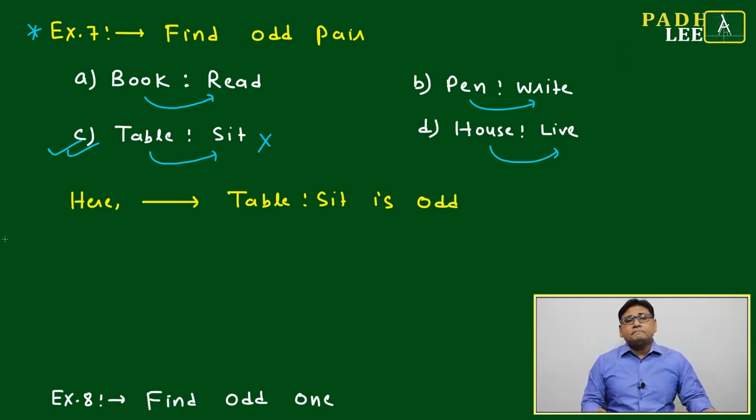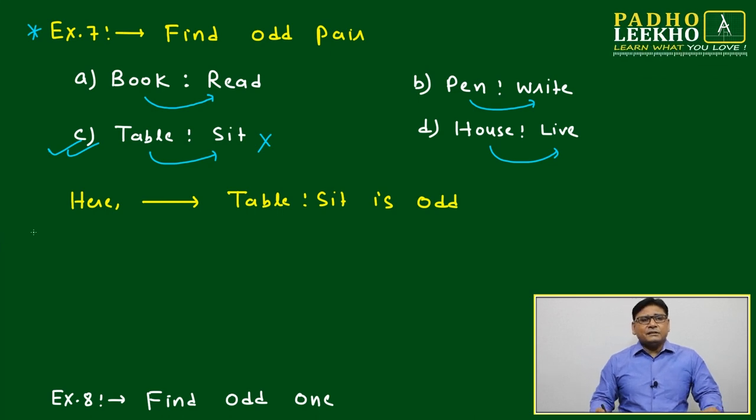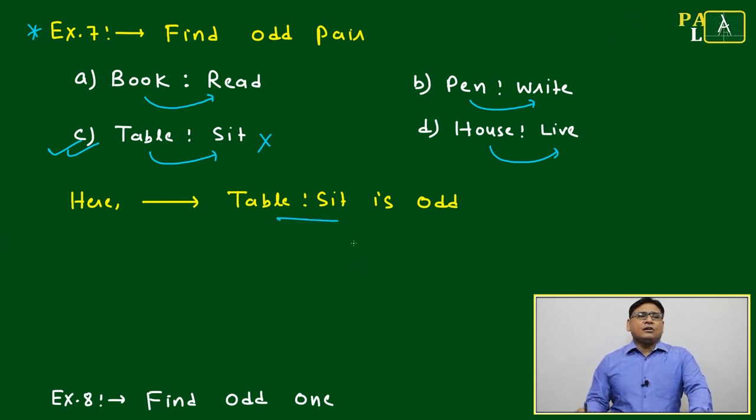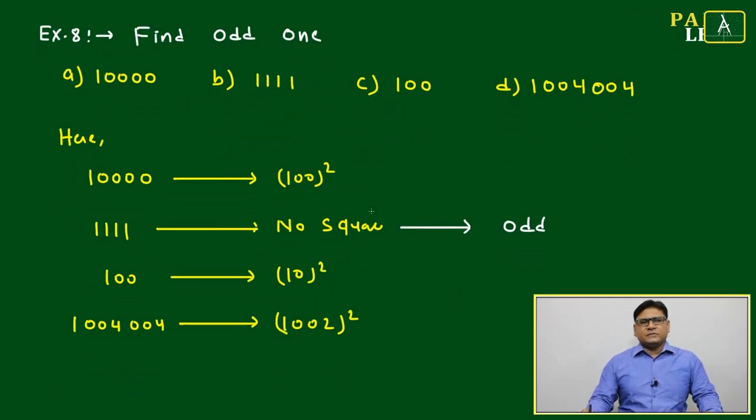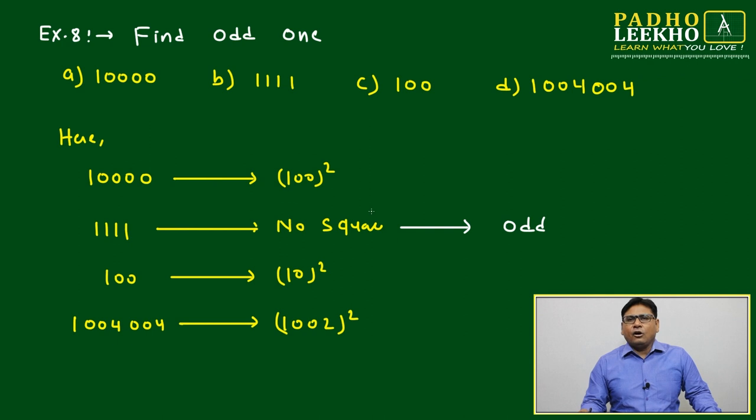Then here table and seat is odd. Just one more example and we'll close the session. No need to worry, that much is sufficient to deal with odd one out.